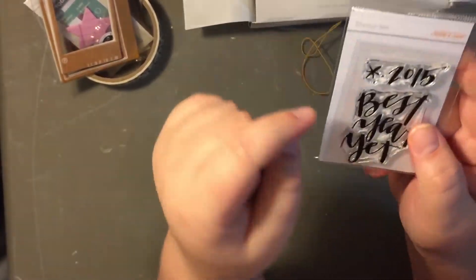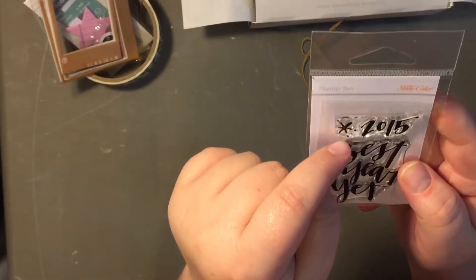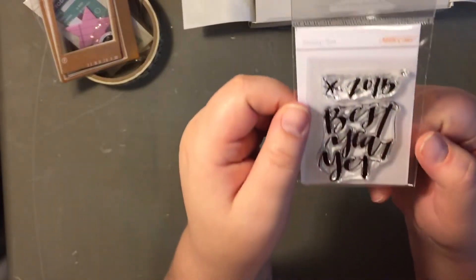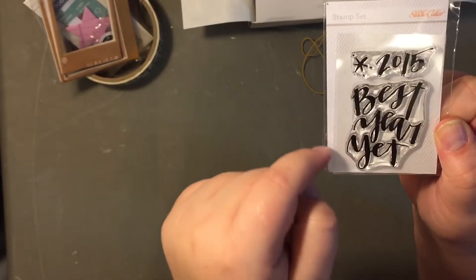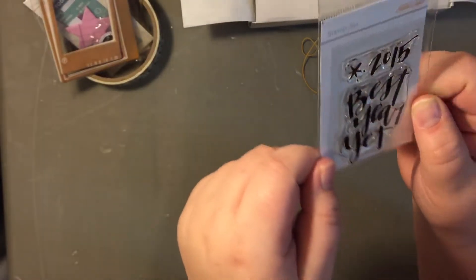And then this says, it's the stamp set. It's got a little asterisk and a 2015. That's just one stamp. And then it says best year yet. I like that one because I feel like you can use it this year or you can use it in 2015. I like that stamp set a lot.